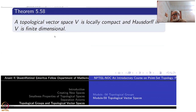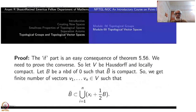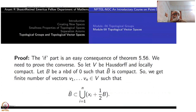The proof may be slightly longer but is much more elegant than the proof for normed linear spaces. It is a more canonical proof. The 'if' part is an easy consequence of our theorem that every finite-dimensional vector space in a topological vector space is isomorphic to K^n. So let us prove the converse.